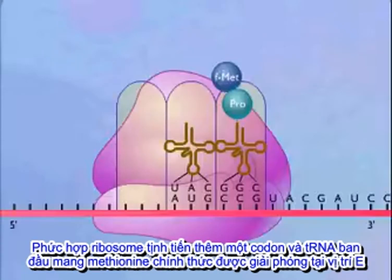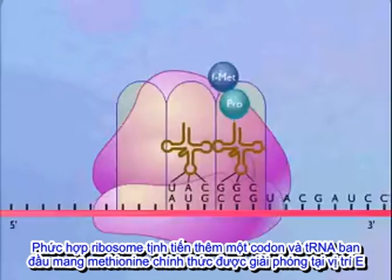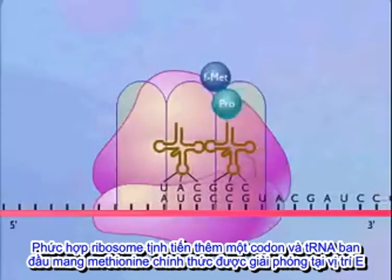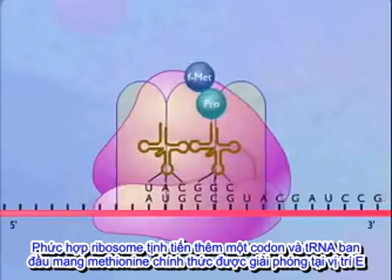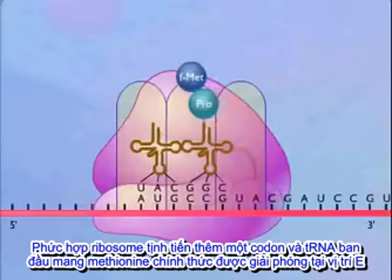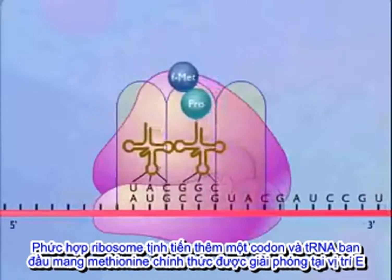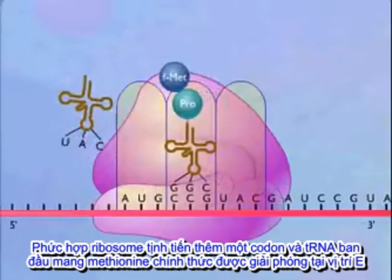The ribosome now advances a distance of one codon, and the transfer RNA that carried the formyl methionine is released at the E-site.